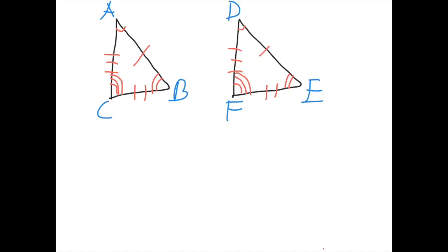Alright, so let's start with these two triangles. I've made a whole bunch of marks on these. These two triangles are congruent. Notice, this side is congruent to this side because of the one mark. This has two marks, so this side is congruent to this side. This has three, so this one is congruent to this one.